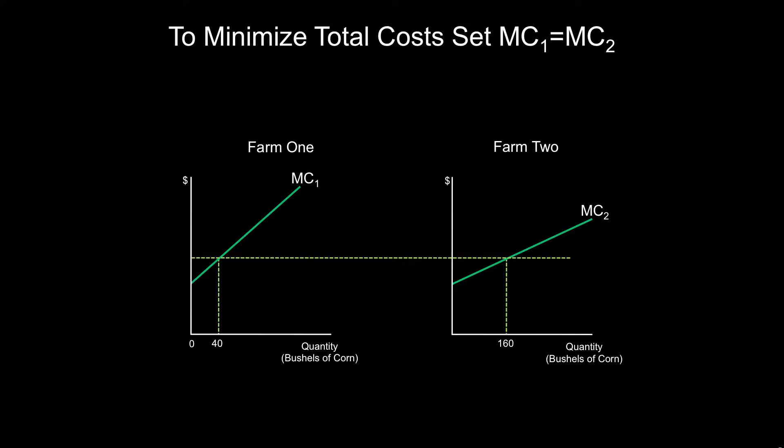So we have reduced our total costs by area C, and yet still maintain the same quantity. Following this logic, it's easy to see that whenever the marginal cost on farm two is above that on farm one, we can reduce total cost by producing less on farm two and more on farm one. Taking this logic to its conclusion, the way to minimize our total cost of production is to produce such that the marginal costs on the two farms are equal.